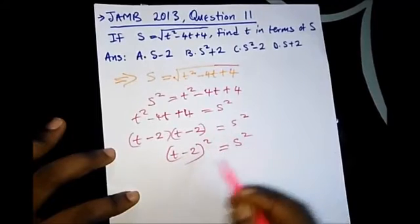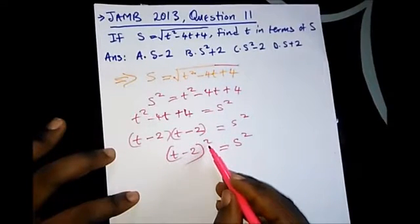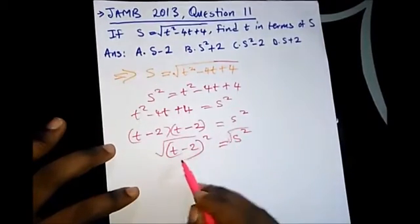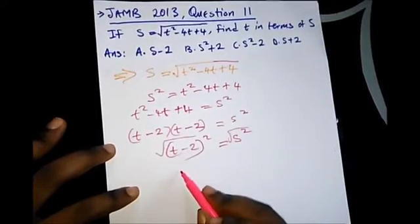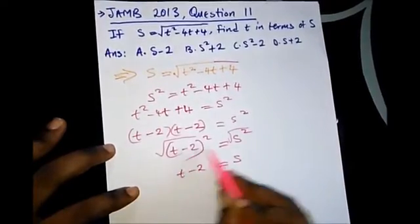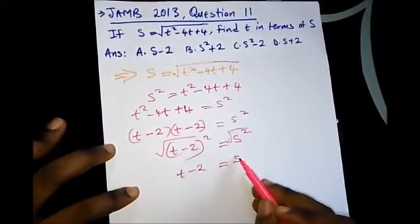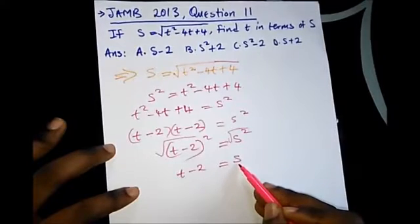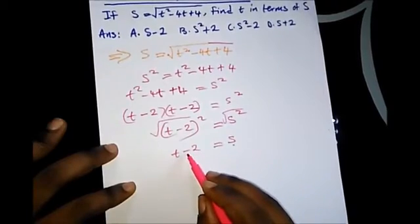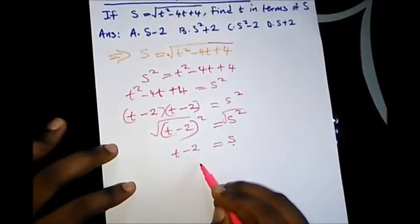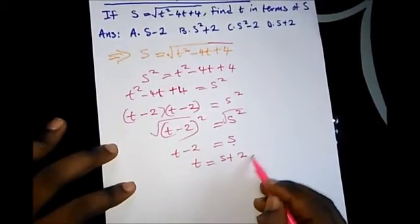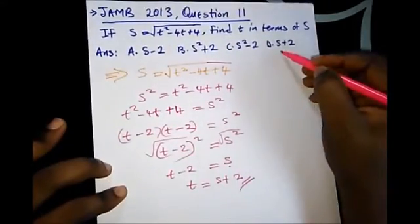So we have (t - 2)² = s². To remove this square, we square root both sides, leaving t - 2 = s. When you square root s² you get s. Making t the subject, we carry -2 to the right-hand side, which gives us t = s + 2. This is our correct answer, which is option D.